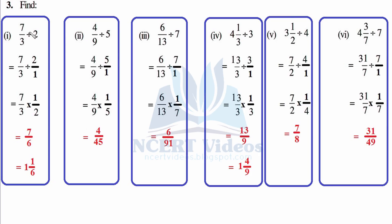So here we go: 7/3 as it is — division as it is. So wherever it is not written, it is 1 in the denominator — you can assume it has to be 1. Now multiplication: we flip it, it becomes 1/2. So 7 over 6 — as a mixed fraction it is 1 and 1/6.